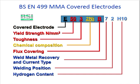This is BSen 499 MMA covered electrode. You see here: E5032NiB7H10. What is the meaning? E means covered electrode, 50 means yield strength in N/mm², 3 means toughness, 2Ni means chemical composition, B means flux covering, 7 means weld metal recovery and current type, 2 means welding position, and H10 is hydrogen content. It is very important to know this electrode classification.